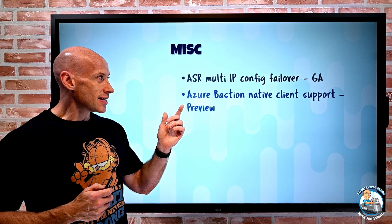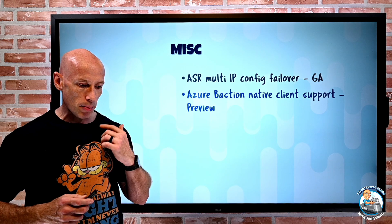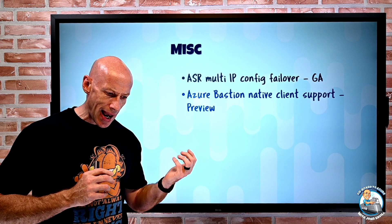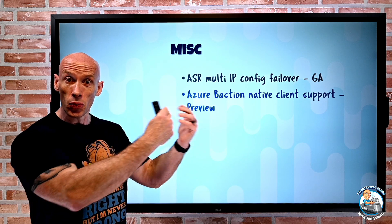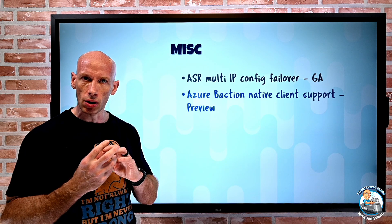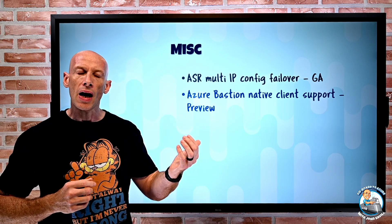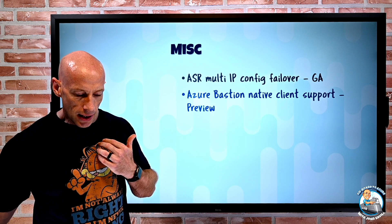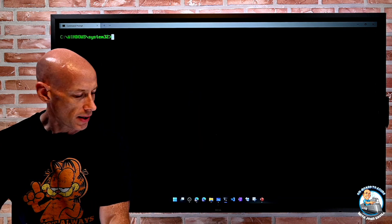Azure Bastion has a number of updates. It now has native client support in preview for the standard SKU, which also adds manual scaling, custom ports, cross-OS RDP and SSH — so you can SSH to Windows and RDP to Linux. Instead of going through the portal where RDP and SSH pop up in the browser, you can now use the native client via the az network bastion CLI command.